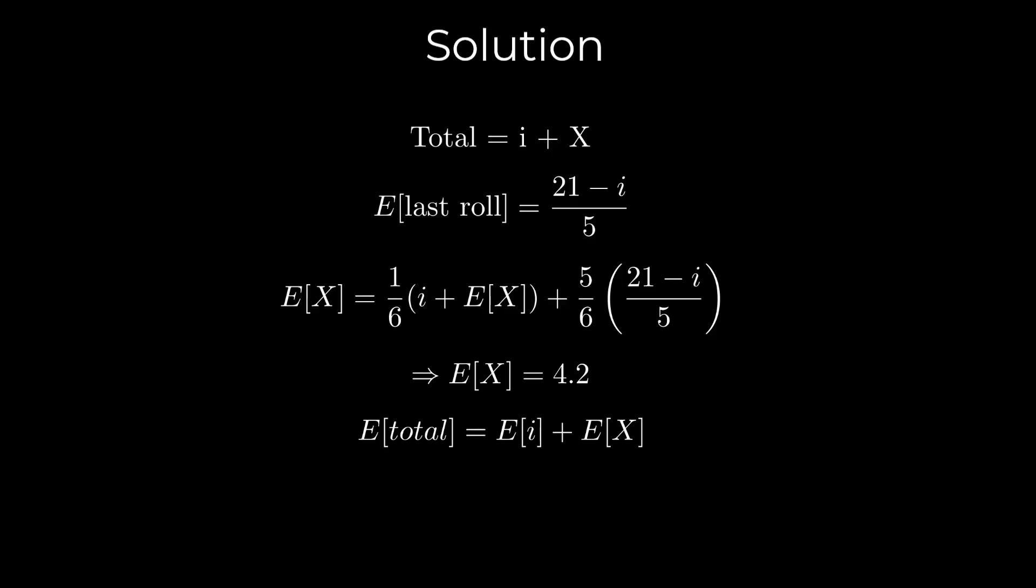Note that E[i] is simply the sum of the numbers 1 through 6 divided by 6 as the initial roll can be any number from 1 to 6, each with a probability of 1/6. Additionally, we calculated E[X] to be 4.2. So the required expected value is 7.7.